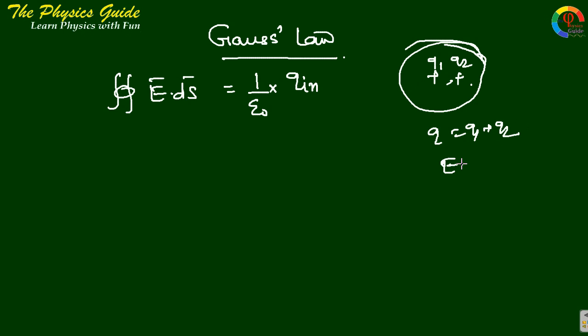This equals charge by epsilon naught. Let there be points at q1 and q2. We need to measure the electric field at these points. Using Gauss's law, we evaluate E dot ds.